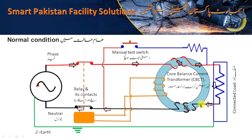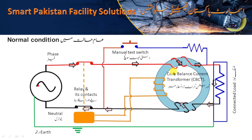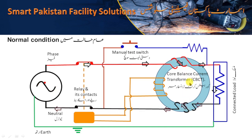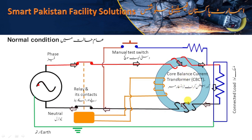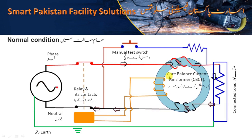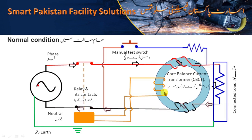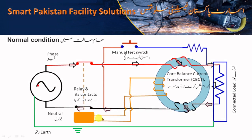This is in this direction and this is in this direction. As per Fleming's law, the flux will be induced in both conductors. But as the magnitude is the same and the direction is opposite, they will cancel the effect of each other. There will be no residual flux in the CBCT. As a result, no current will be induced in the residual current coil, and the system will work normally.